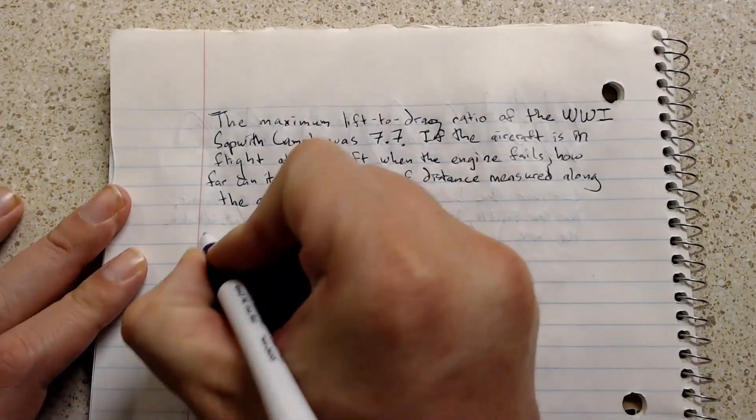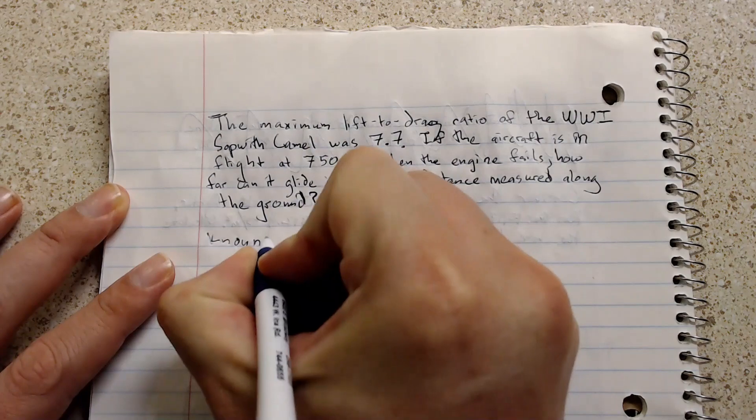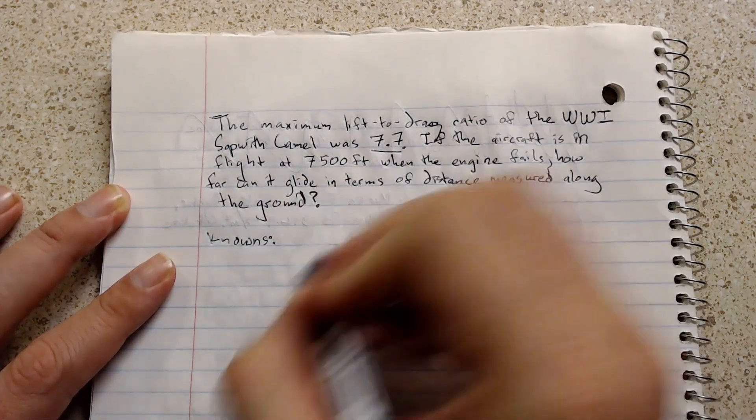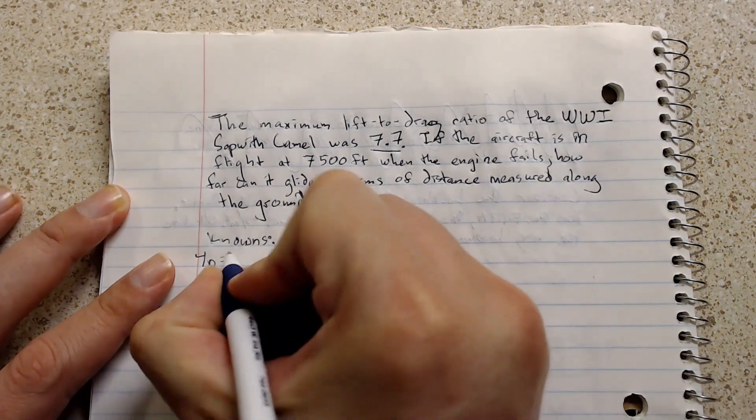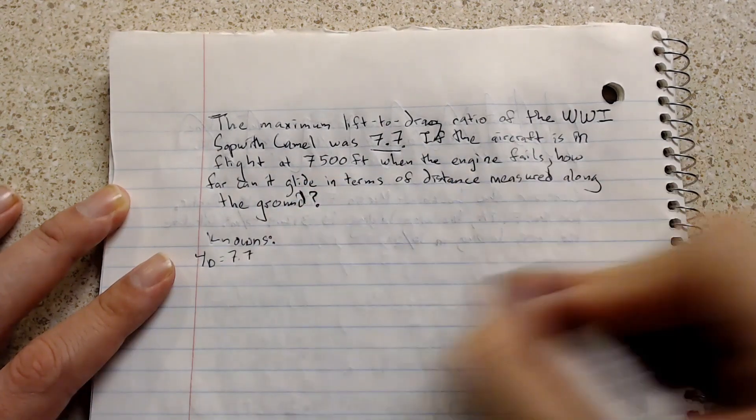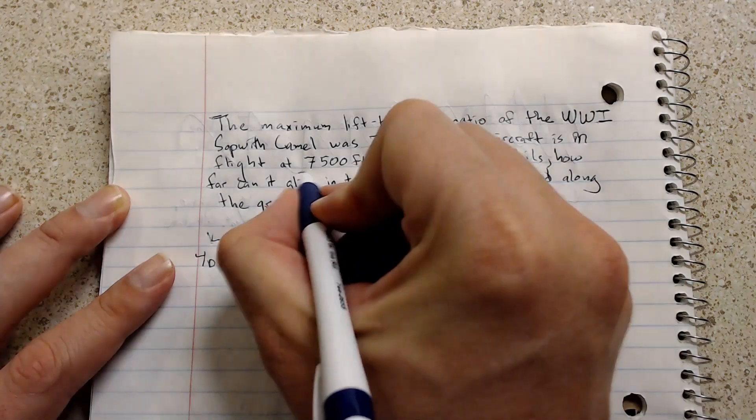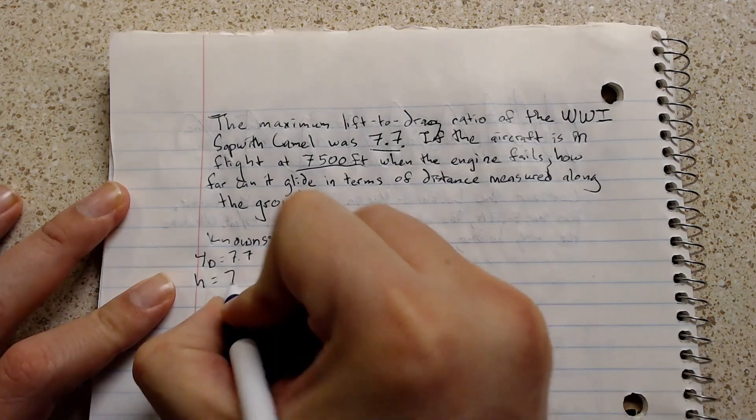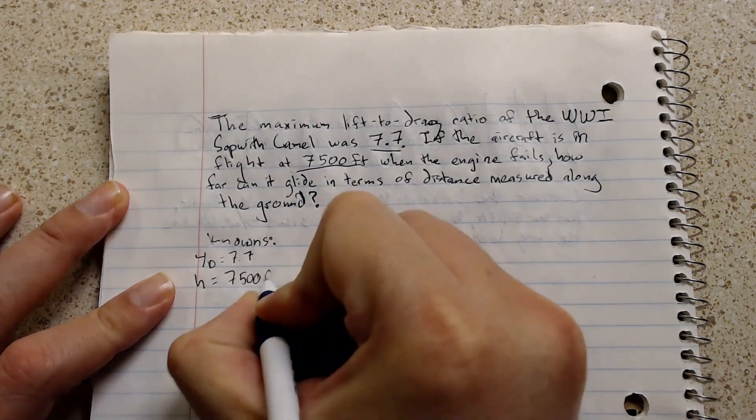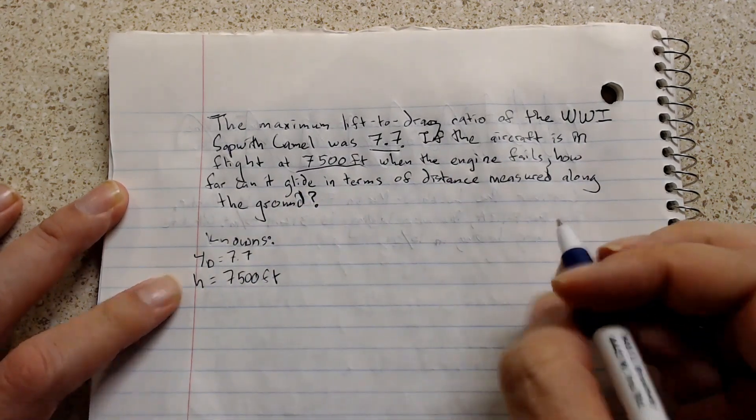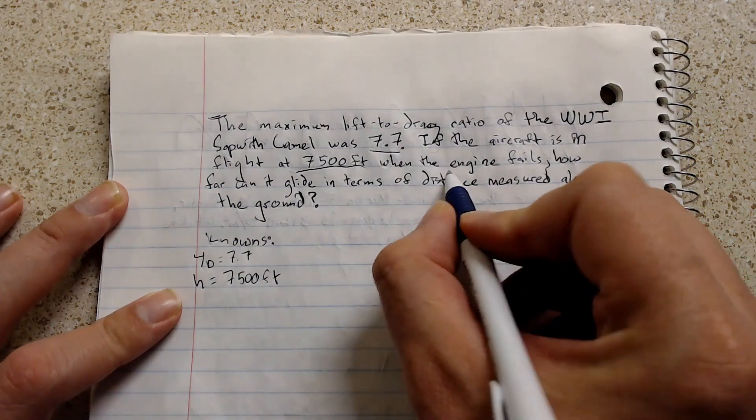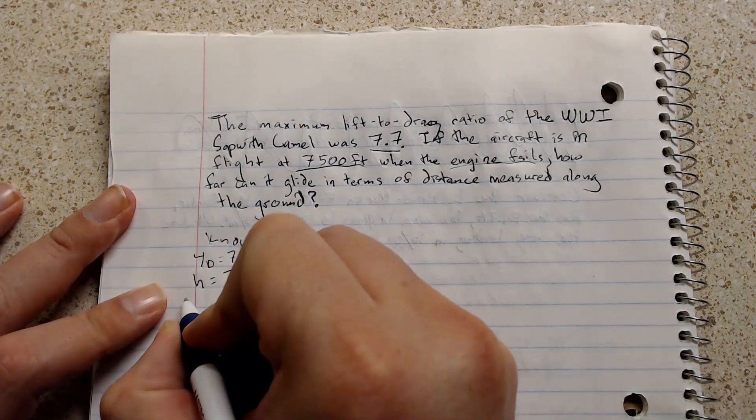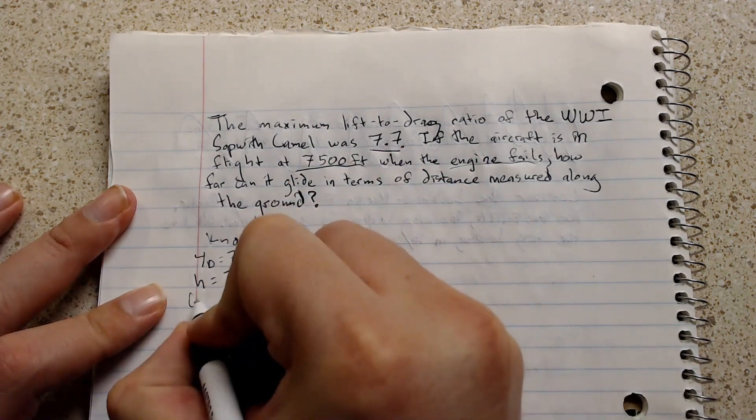So let's go ahead and start by pulling out the knowns in the equation. We have a lift-to-drag ratio of 7.7. We have an altitude, a height of 7,500 feet. Now we also have information here that the engine has failed, so we know we're going to be in a power-off glide.